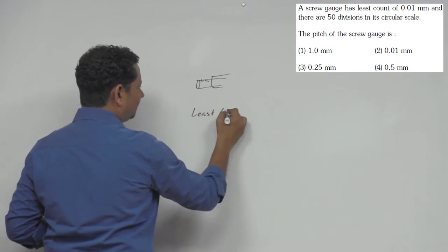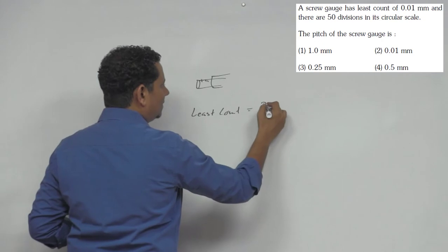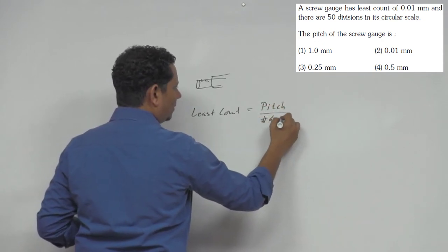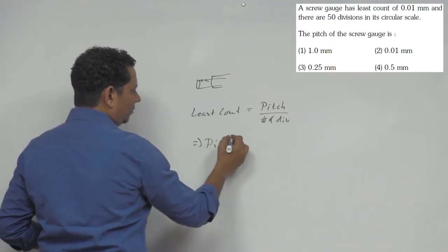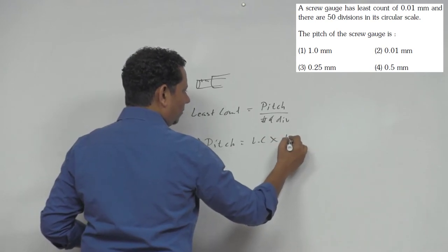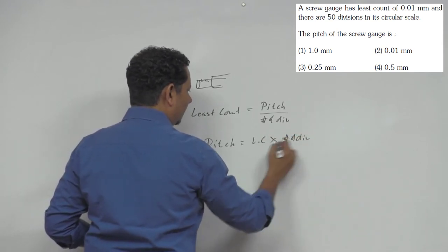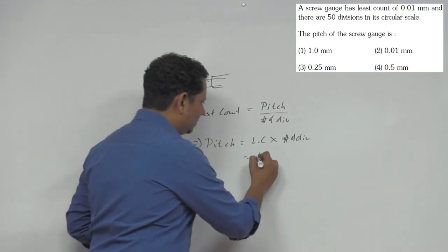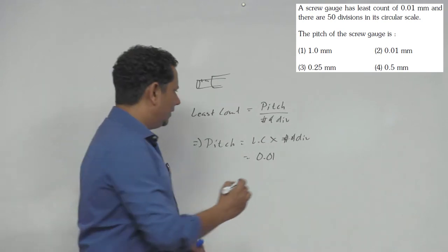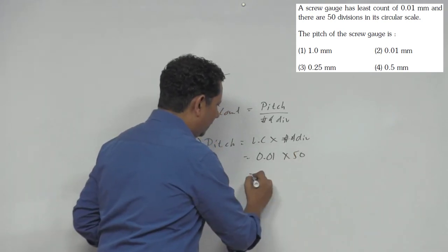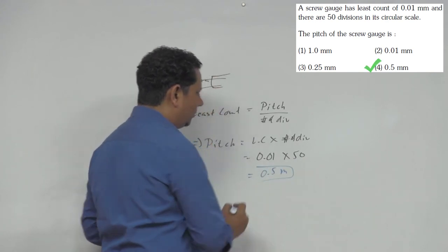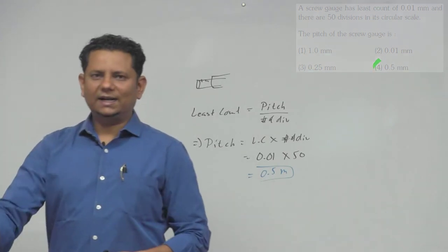Least count is equal to pitch divided by the number of divisions. Which implies pitch will be equal to least count multiplied by the number of divisions. Least count is 0.01 mm, multiplied by 50. This means pitch will be equal to 0.5 mm. So, 0.5 mm is the right answer.